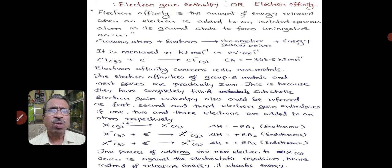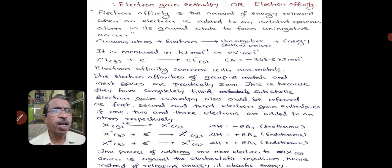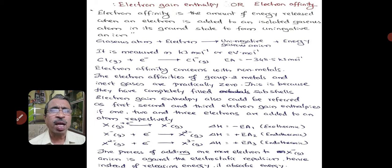Let us take an example. Chlorine gas in atomic state, when an electron is added, we get the chloride ion and the energy given out in this case is 348.5 kilojoules per mol. This is an exothermic reaction, meaning energy is given out.